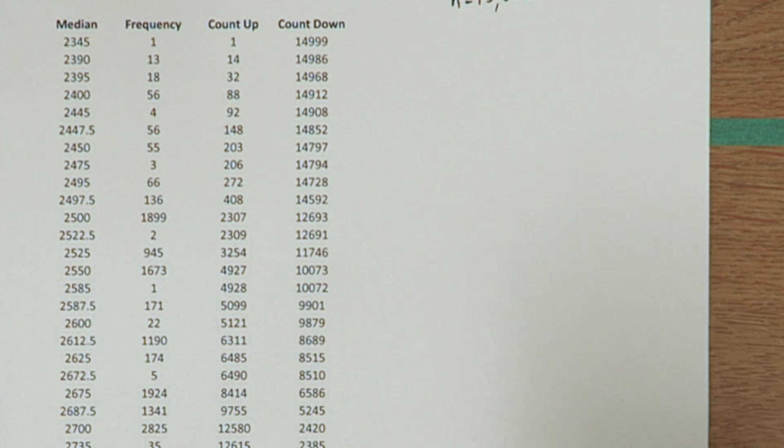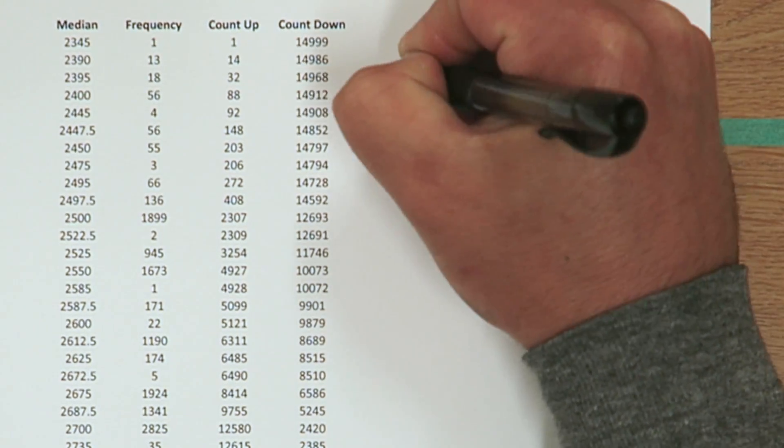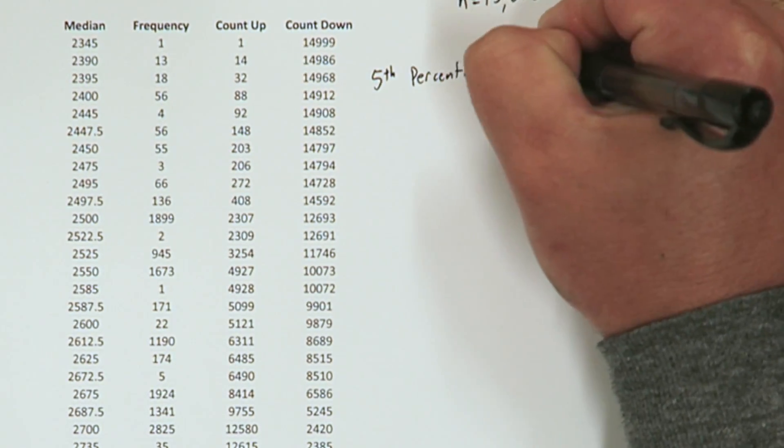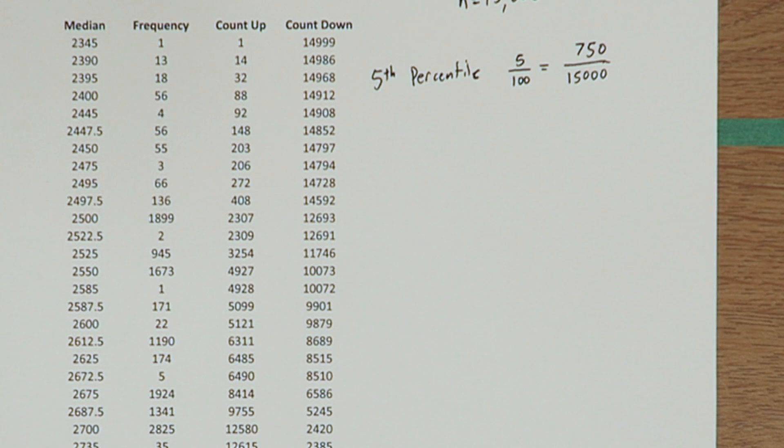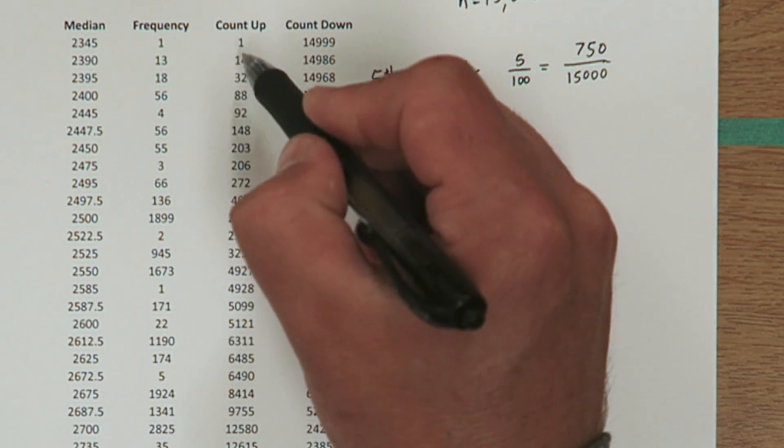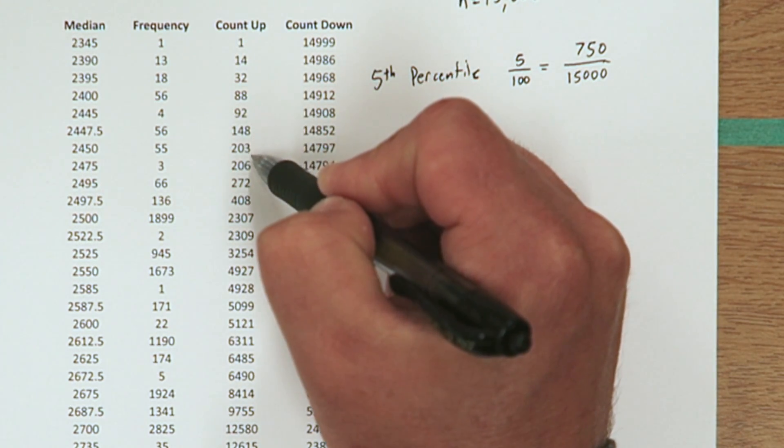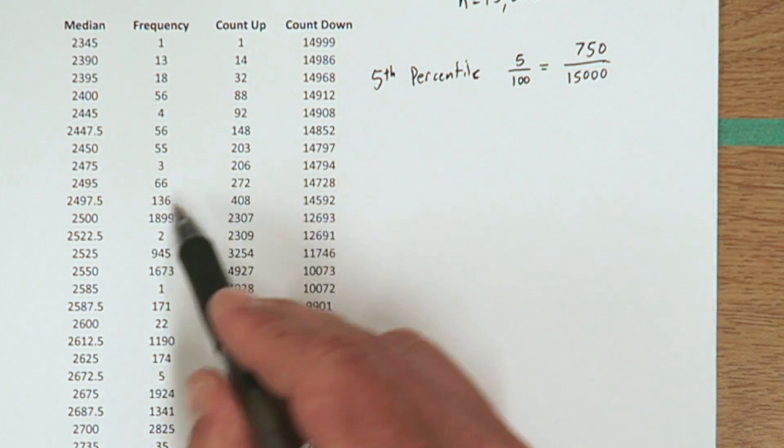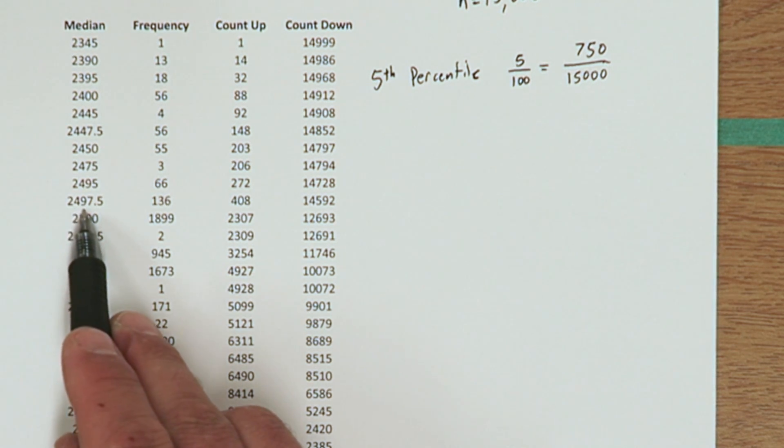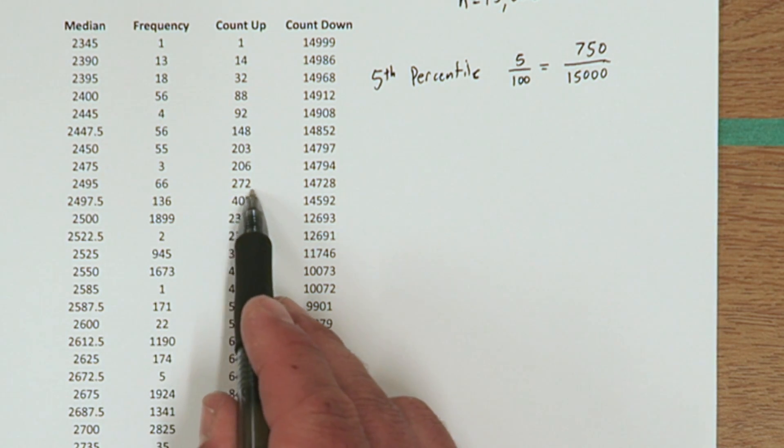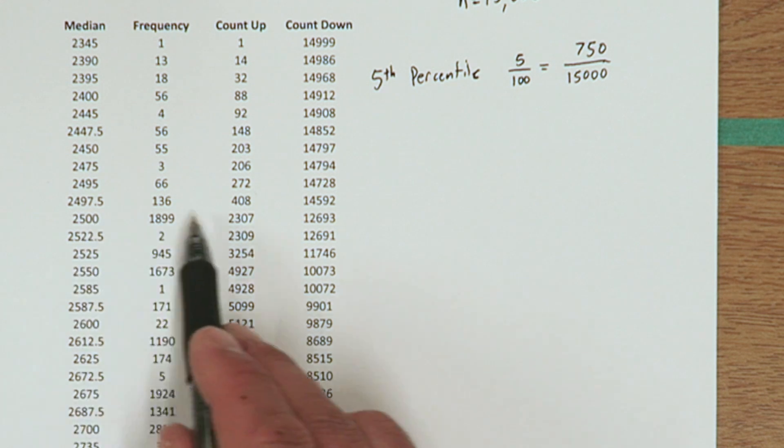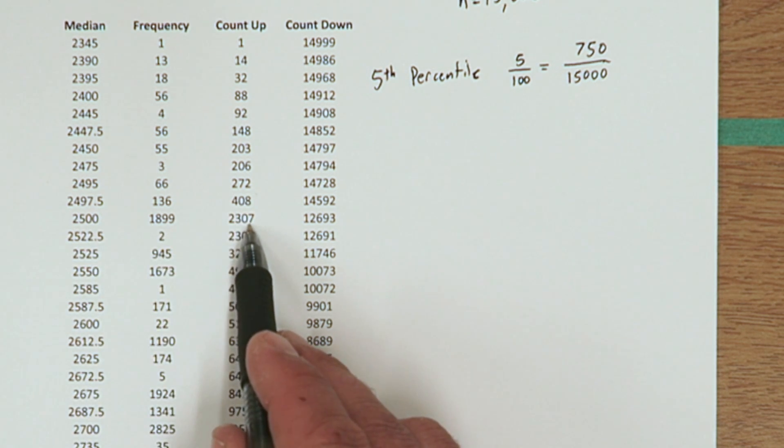So to find the 5th percentile, we need to find what sample median cuts out the lower 5% of the data. And that turns out to be the 750th sample median when you arrange the medians from least to greatest. So looking at my count up column here, by the time I get to 2,497.5, that's 408 medians. But then when I get to 2,500, I'm at 2,307. So the 750th lowest sample median is 2,500.